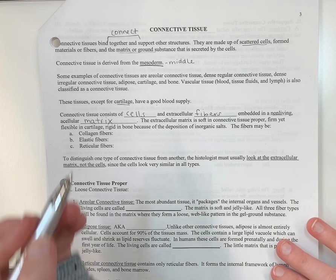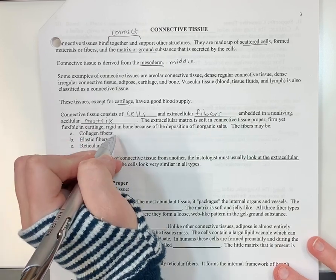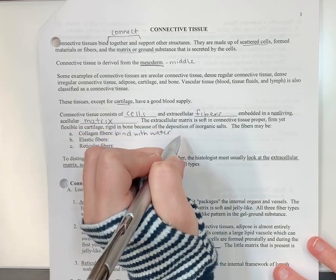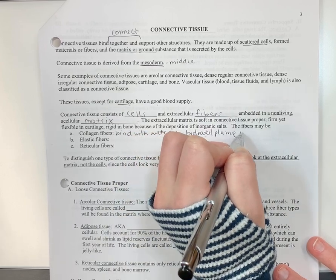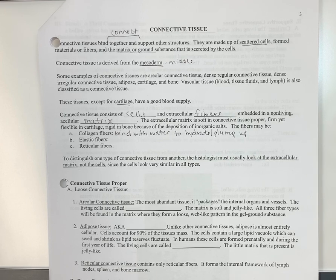The fibers that we can have, we can have collagen fibers. Collagen fibers, their job is to bind with water and that's going to hydrate or plump up the tissue. So think collagen fibers, that's a buzzword in advertising for anti-aging facial products. So it increases collagen. And so if you increase the collagen in your face and it hydrates and plumps up your facial tissue, guess what goes away? Wrinkles. Wrinkles. Exactly. That's what collagen does.